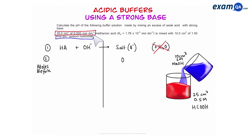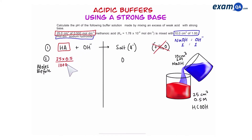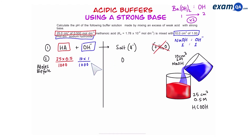Let's start by working out the moles of the weak acid using: volume × concentration ÷ 1000. For the moles of hydroxide ions, you first have to check the ratio with the strong base. Since we have sodium hydroxide it's a one-to-one ratio, so the moles of sodium hydroxide and hydroxide will be the same — simply 10 × 1 ÷ 1000. Note: if you had a strong base such as barium hydroxide, you'd multiply the moles of barium hydroxide by two to get the moles of hydroxide ions.